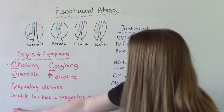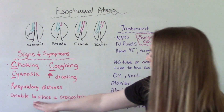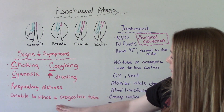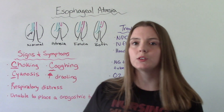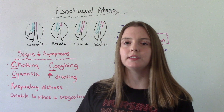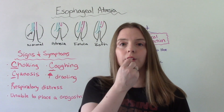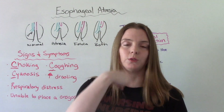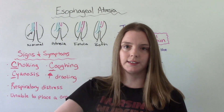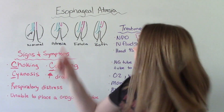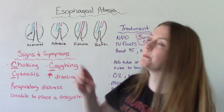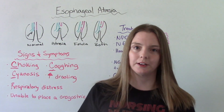Another sign is the inability to place an orogastric tube. This is when they try to place a tube down the mouth, down the throat into the stomach, and it doesn't go there because there's a pouch stopping it.